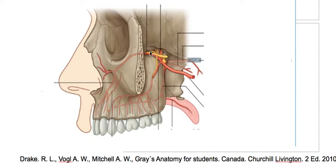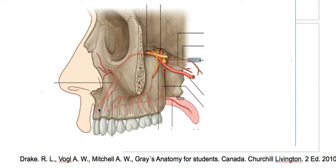This other branch is the infraorbital artery, passing through the infraorbital fissure and then the infraorbital canal. It gives rise to the anterior superior alveolar artery, which supplies the incisor and canine teeth as well as a portion of the maxillary sinus.